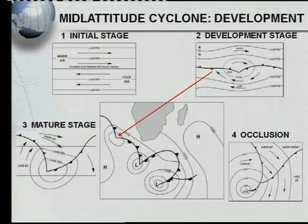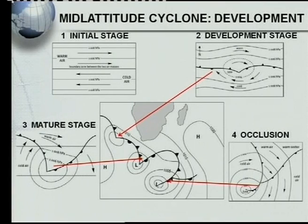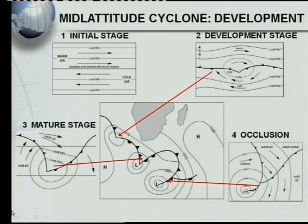That one would be our development stage — we can see that the fronts have just started to form. This one would be our mature stage. And that one is the occlusion stage. If you look at this small part of the cyclone here, you would see that both the warm front and the cold front are indicated, so this is our occlusion and that would be the oldest of the three cyclones. What you must remember is that when you've got a group of cyclones in different stages, we call them a family of cyclones — this has been asked in exams. This would be our development of the mid-latitude cyclone.